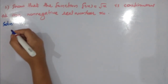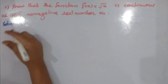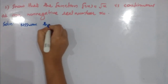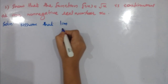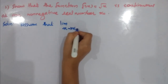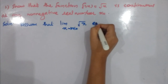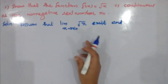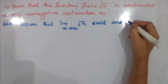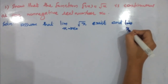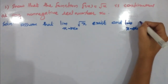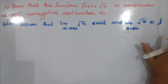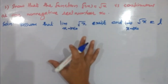We will assume the basis. Assume that the limit as x tends to x₀ of √x exists. We can say that limit as x tends to x₀ of √x is equal to L. Just take a look — that's how we can do it.